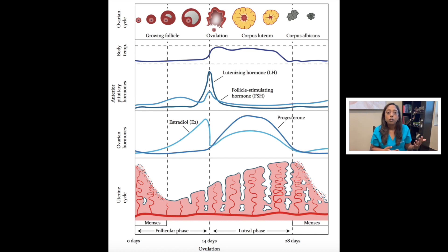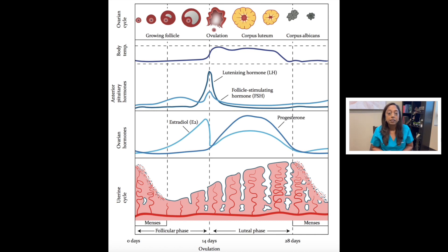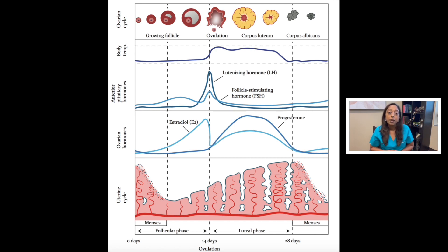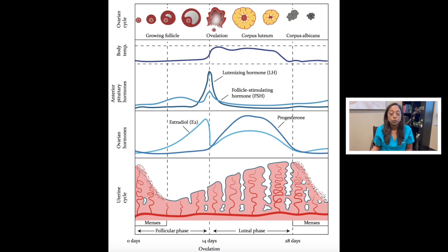The follicle after ovulation becomes what's called a corpus luteum, and the corpus luteum will make estrogen and progesterone, which is also important for implantation. If a pregnancy implants, then HCG is produced and that HCG will stimulate the continued survival of the corpus luteum and that continued estrogen and progesterone production. If a pregnancy does not implant, then the corpus luteum will regress and die off, the estrogen and progesterone will decline, and then a period will result.